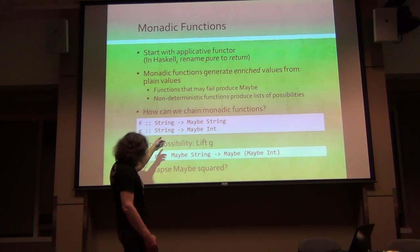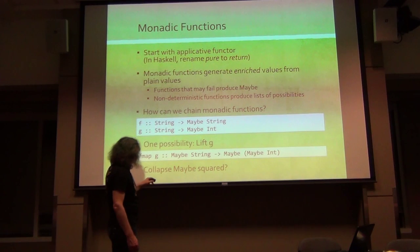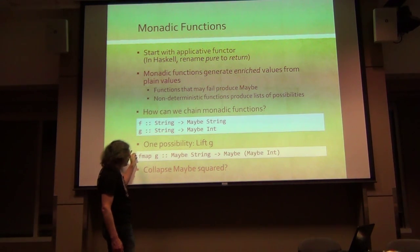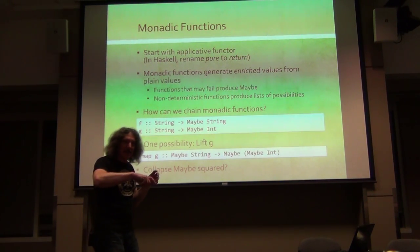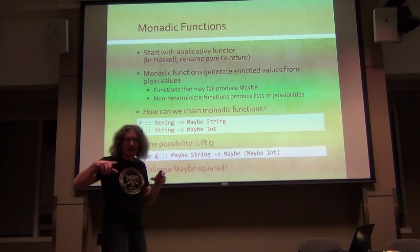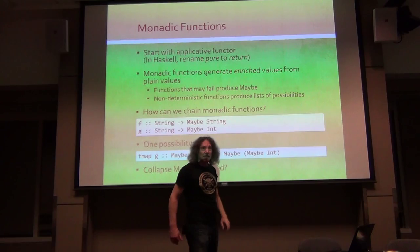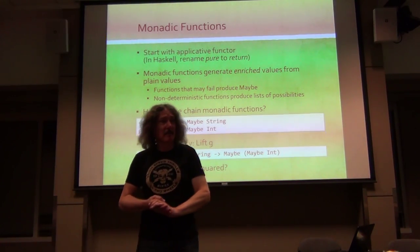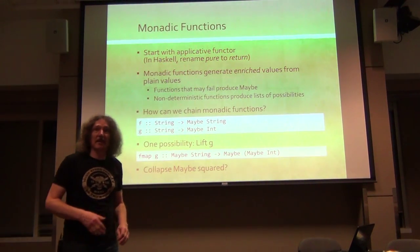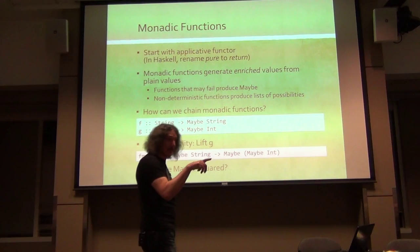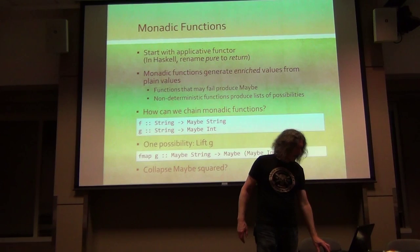If we are talking about Maybe here, for example: Maybe String to Maybe Int - when we lift the function, we get a function from Maybe String to Maybe Maybe Int. Now if we can collapse this Maybe-squared, then we are fine. And that's one way of defining a monad - by providing the operator that collapses stacks of monads.